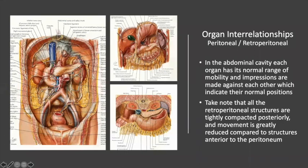There are things that are retroperitoneal — behind the layer of peritoneum — and things that are in front of the peritoneum. Things in front of the peritoneum have to move more. Things behind the peritoneum, like the kidneys, part of the spleen, and duodenum, need to stay in a certain place. It is about structure and function: things that are moving should move. When things don't do what they should do, we get pain and dysfunction.